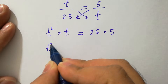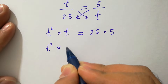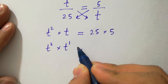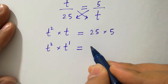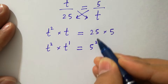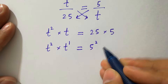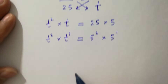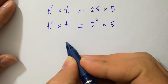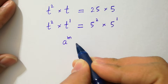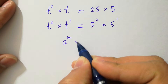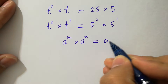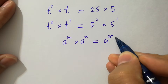t squared times t is the same as t to the power 3, and 25 times 5 is the same as 5 to the power 3. As we know, a to the power m times a to the power n equals a to the power m plus n.